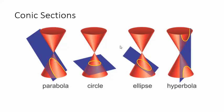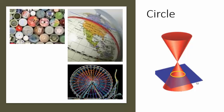Here we've got the four conic sections and I'm going to go through them individually. Let's start with the first one, which is the circle. If I take a plane like a piece of paper and cut through a cone so that the plane is parallel with the base of the cone, the intersection would be a circle.